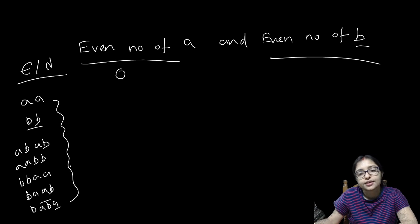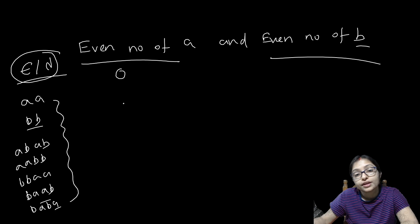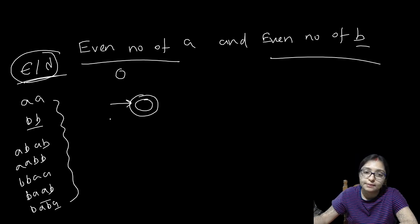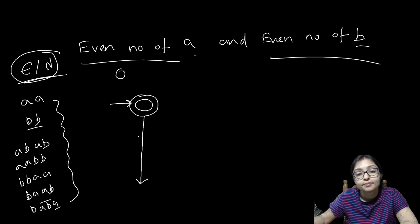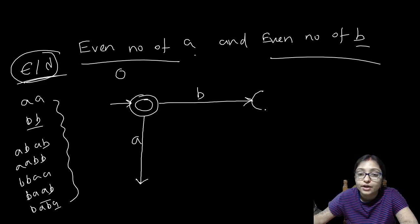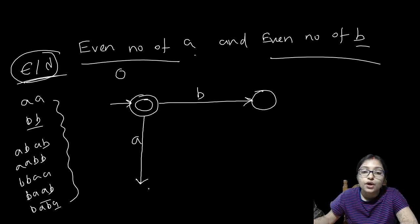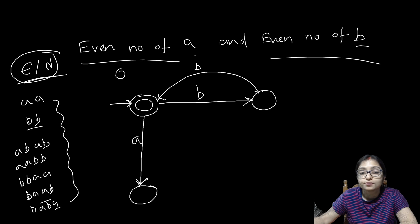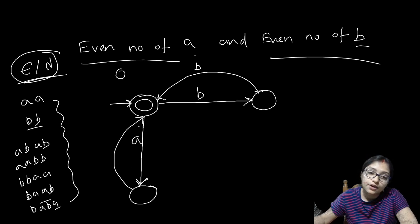Always start with the minimum string. The minimum string is epsilon or lambda. So whenever you are drawing the DFA, whenever epsilon is accepted the initial and final state will be the same. As it is the string of A and B, one possibility starts with A and another starts with B. When there is only one B, that is not accepted — it is a non-final state. When there is only one A, that is also not accepted. Whenever another B comes it will be accepted, and whenever another A comes that will also be accepted.